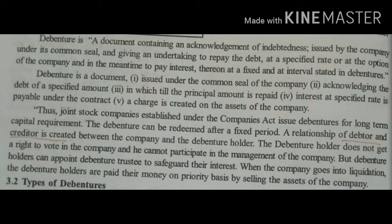A relationship of debtor and creditor is created between the company and the debenture holder. A joint stock company issues debentures for long-term capital investment, but the debenture holder does not get a right to vote in the company, nor can he participate in the management. To safeguard their interest, the debenture holder can appoint a debenture trustee. As the company goes into liquidation, the debenture holders are paid first by selling the assets of the company.